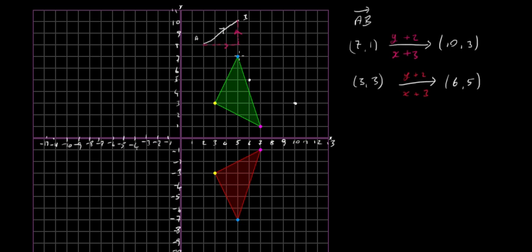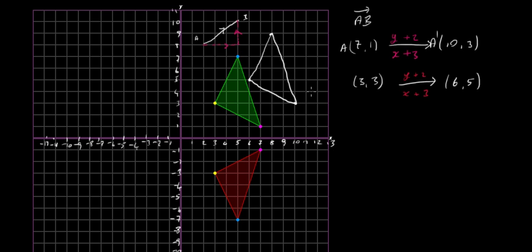The third point is (5, 7). Add 3 to 5 gives us 8, and add 2 to 7 gives us 9. So that point ends up at (8, 9). That's our translated triangle — just join those three points up and that's our image. If the original point was A, then the translated point is written as A prime or A dash, to show that it's the image.